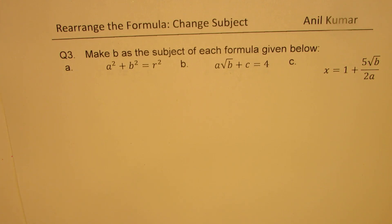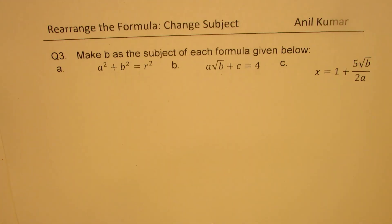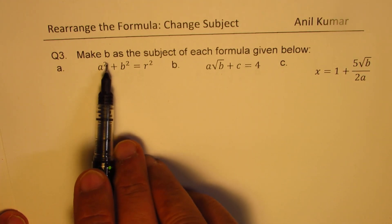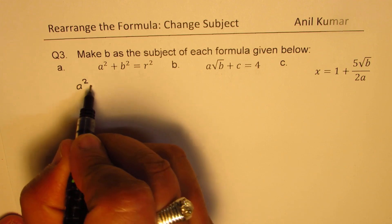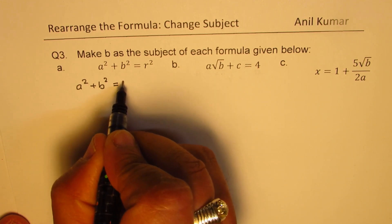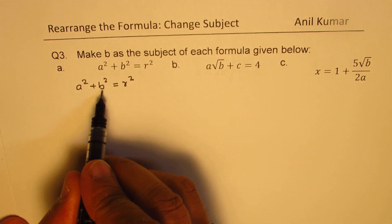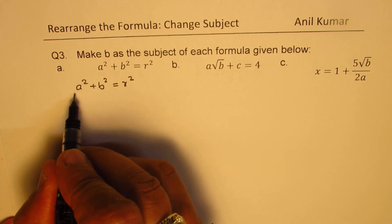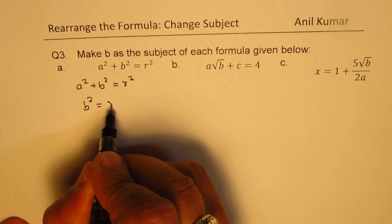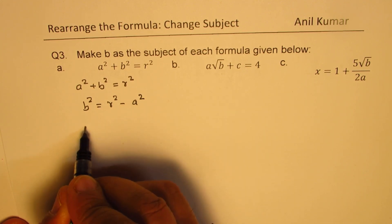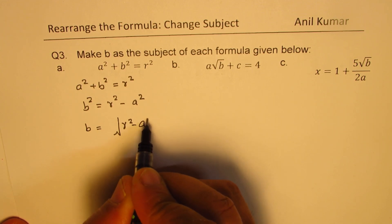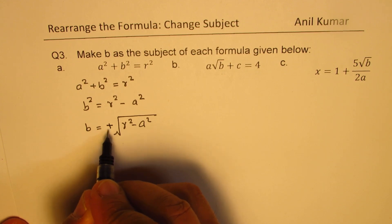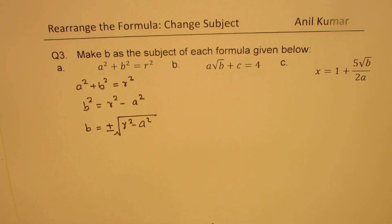Here is question number 3. I'd like you to pause the video, answer this question, and then look into my suggestions. Make B as a subject: A square plus B square equals to R square. We need to isolate B, so take away A square to get B square equals to R square minus A square. To get B, we square root. Remember, whenever you do square root, you have to write plus and minus.